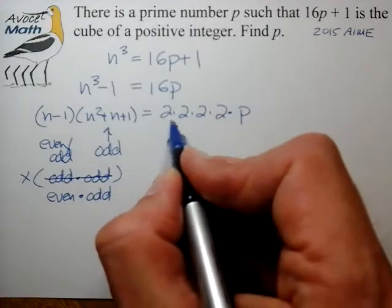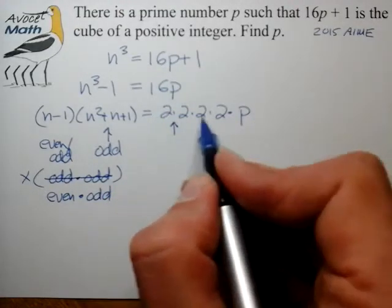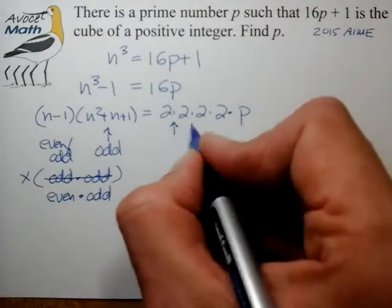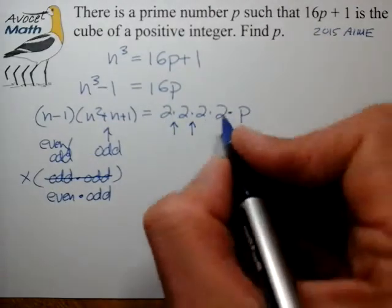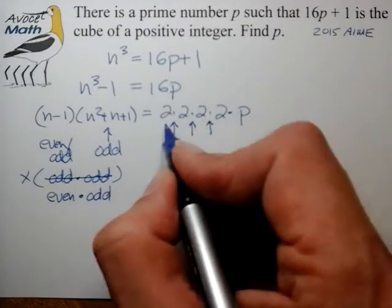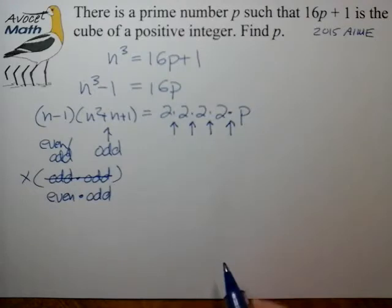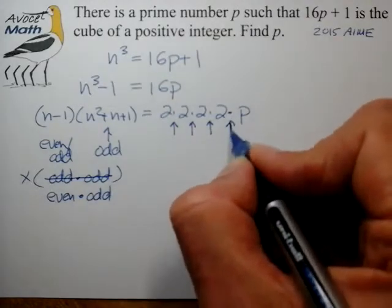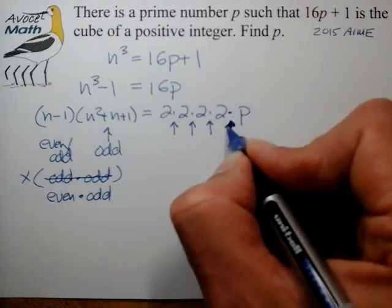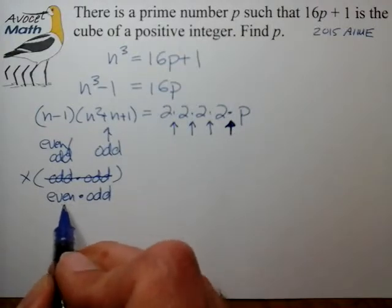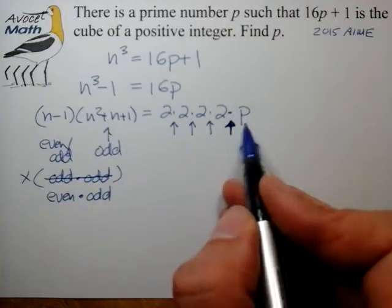We can either break it up here in which case we have a 2 to the left and 2 times 2 times 2 times p to the right or we can break it up here in which case we have 4 to the left and 4 times p to the right. Likewise here 8 to the left, 2 times p to the right or we can break it up here. And what we notice is that there's really only one place that we can break this up such that we get an even times an odd number. So we basically know how this factor group has to match up here.